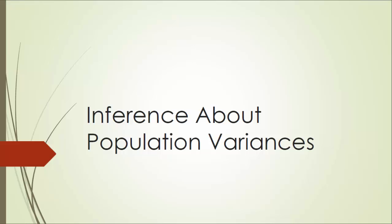In the previous chapters, we talked about statistical inferences about population means, population proportions, difference between two population means, and difference between two population proportions. In this chapter, we are going to discuss the inference about population variances.